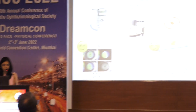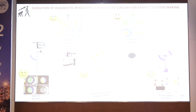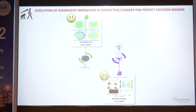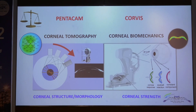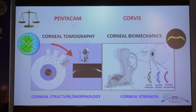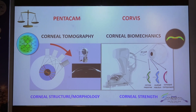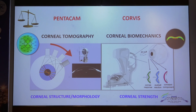With the evolution of diagnostic modalities in refractive surgery, it has helped us in making perfect decisions and avoiding complications. Currently, our decision on choosing the procedure is predominantly dependent upon corneal tomography and its biomechanics. Pentacam, which is a corneal tomographer, helps us to measure the corneal structure or morphology, whereas Corvis measures the corneal biomechanics and tells us about the corneal strength.